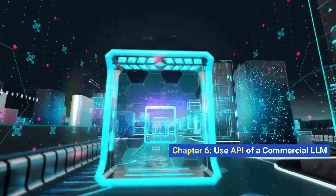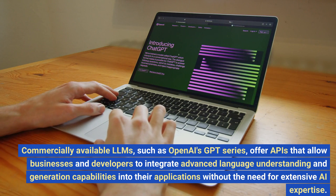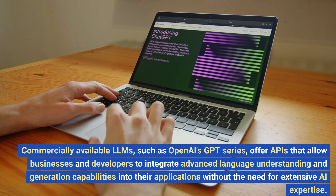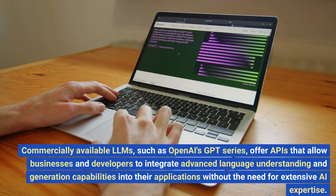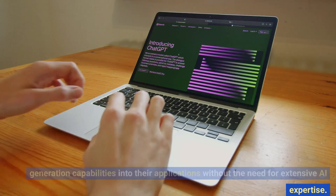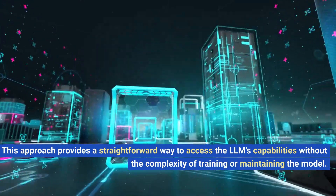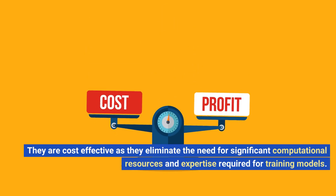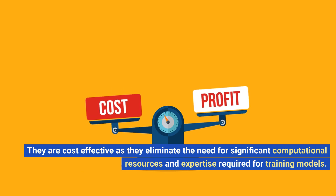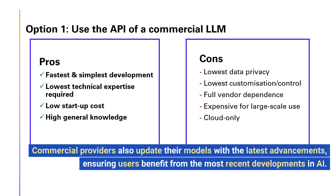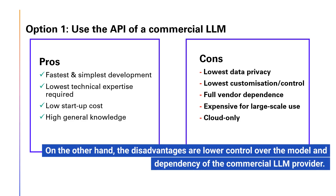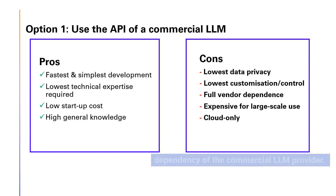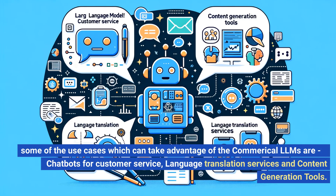Chapter 6: Use API of a Commercial LLM. Commercially available LLMs, such as OpenAI's GPT series, offer APIs that allow businesses and developers to integrate advanced language understanding and generation capabilities into their applications without the need for extensive AI expertise. This approach eliminates the need for significant computational resources, and commercial providers continuously update their models with the latest advancements. On the other hand, disadvantages include lower control over the model and dependency on the commercial LLM provider. Use cases include chatbots for customer service, language translation services, and content generation tools.